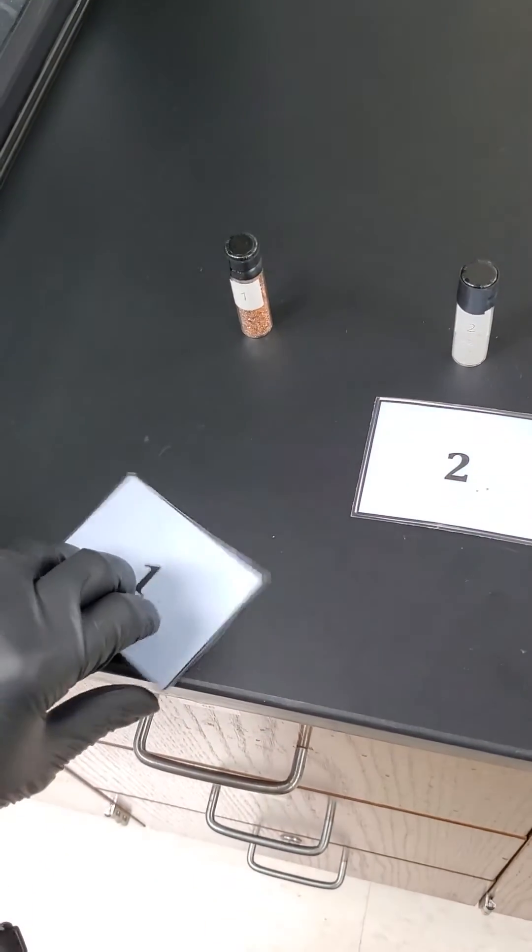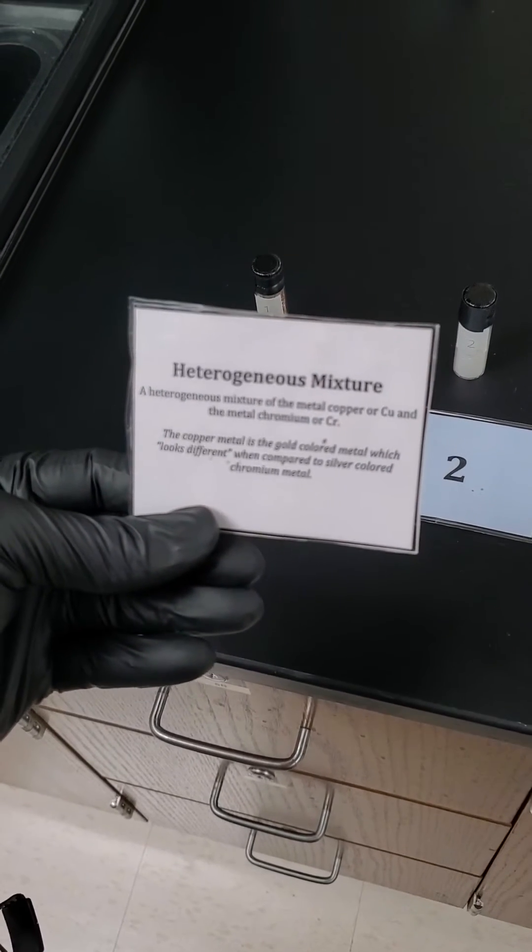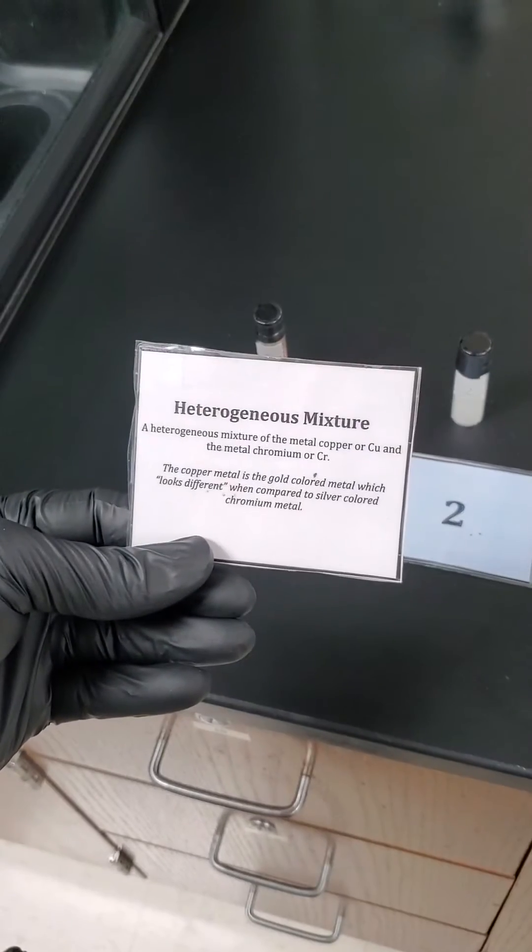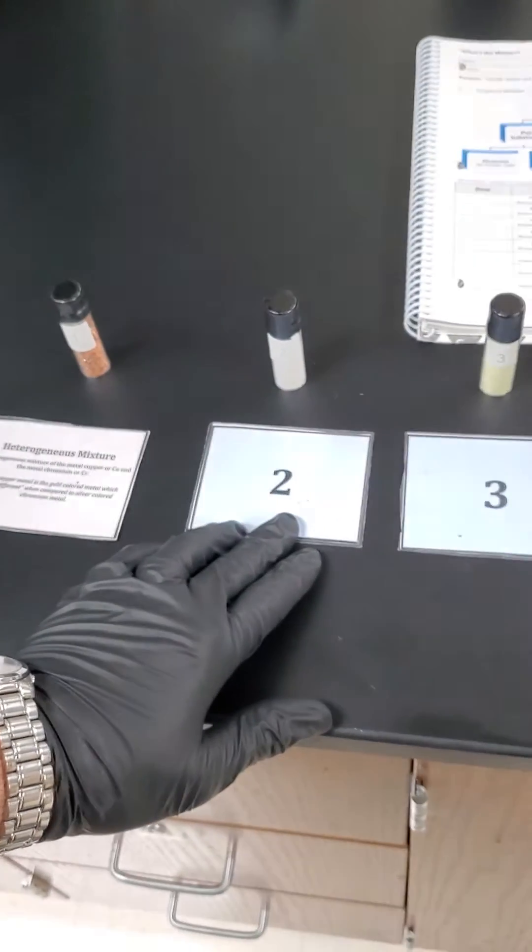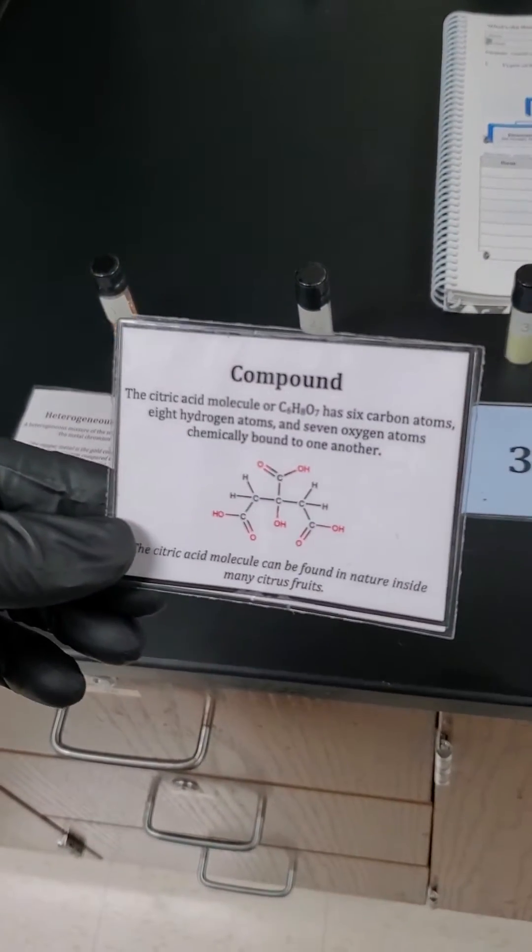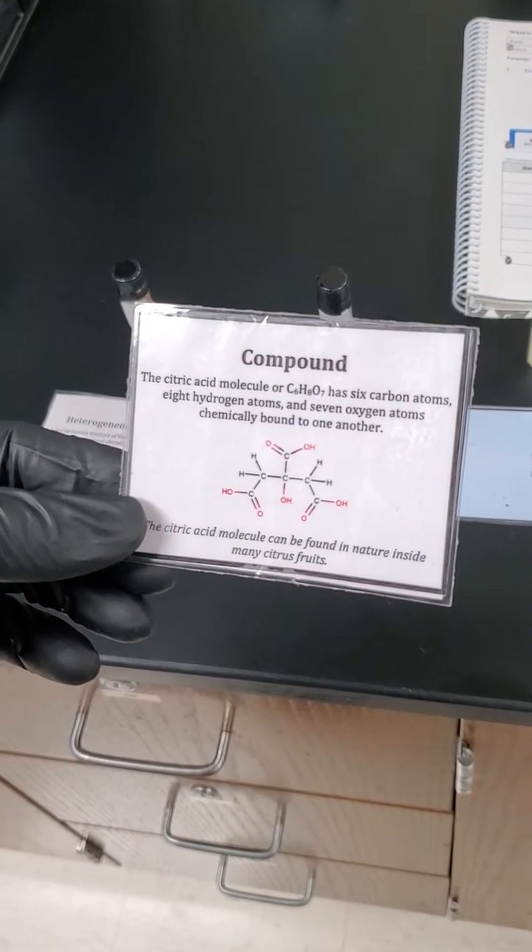Alright, so let's look at number one. Definitely heterogeneous matter. Definitely looks different. In this case, we have a mixture of copper and chromium. Number two, this white dust. Well, it's not methamphetamine. This one is citric acid. This is what makes your candy sour. It's a big compound.